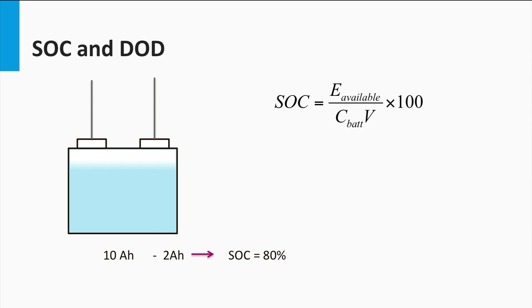Then we also have the depth of discharge or DOD. Depth of discharge is defined as the percentage of the battery capacity that has been discharged. Thus a 10Ah battery that has been drained by 2Ah has a depth of discharge of 20%. Thus the depth of discharge and the state of charge can be seen as complementary to each other.